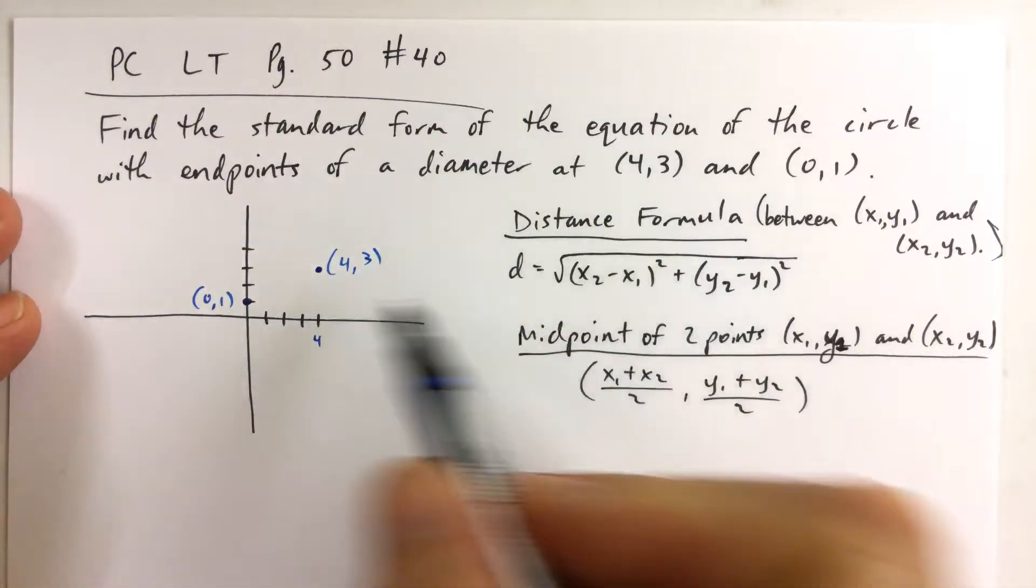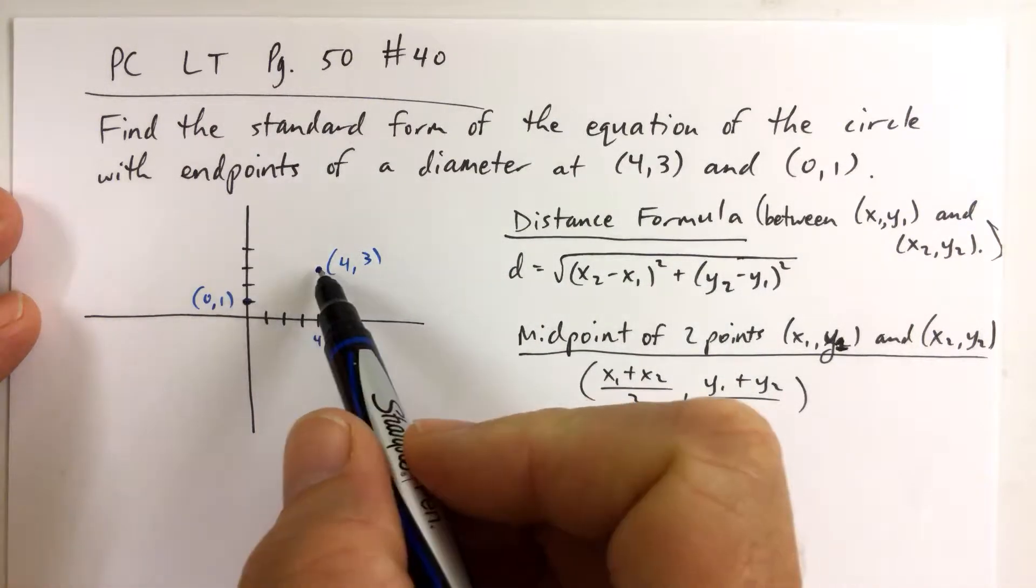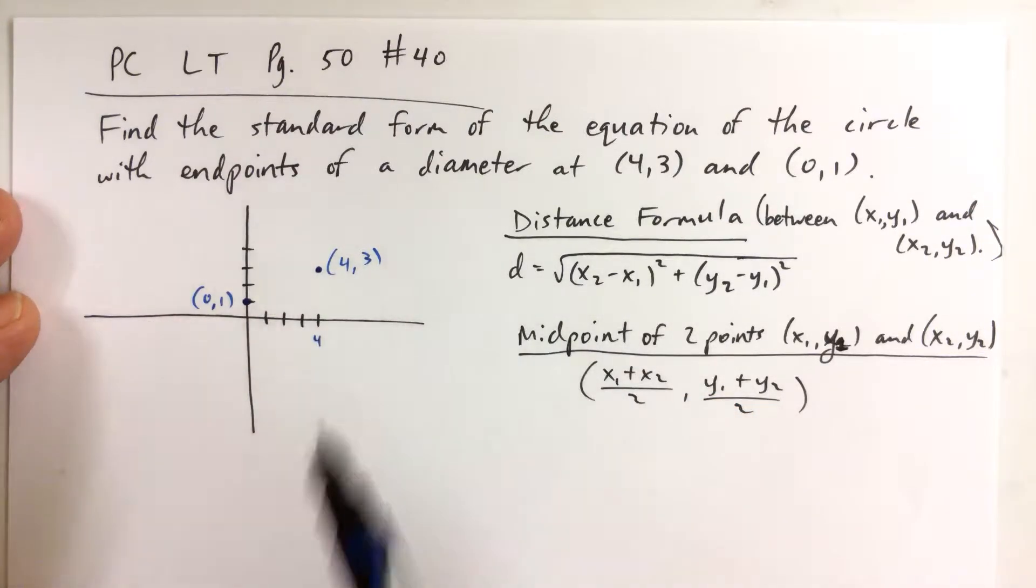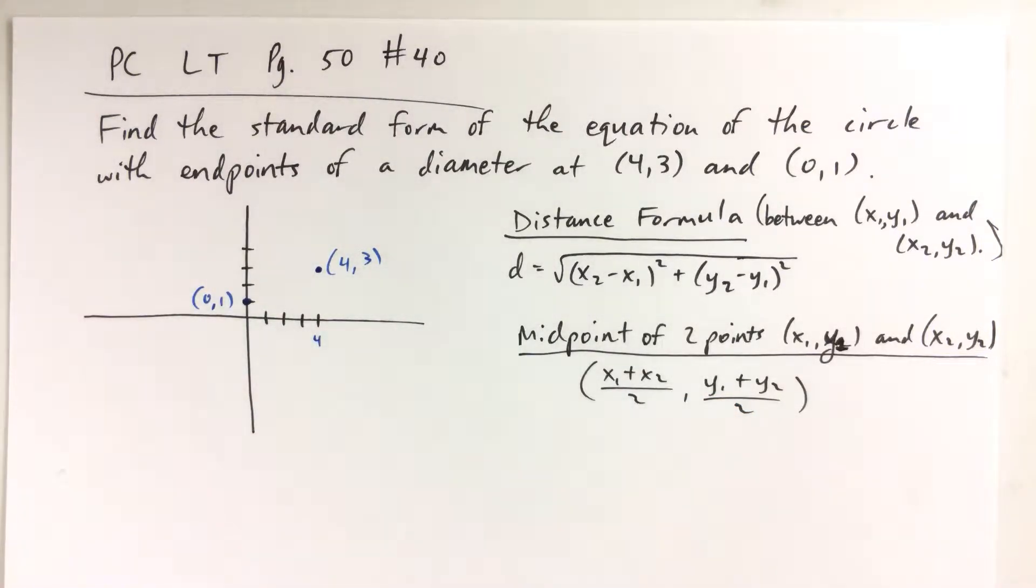Then we could also use the distance formula to figure out how far it is, and then we can cut that diameter in half and come up with the radius of the circle. But I'm going to show you a different way first - what do you do if you don't remember the distance formula or the midpoint formula?